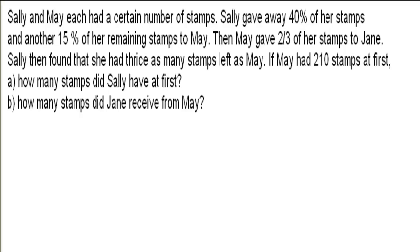Let us first underline the important facts in the question. So we have: 40% of stems, 15% of remaining stems, two-thirds of stems, thrice as many, and 210 stems.